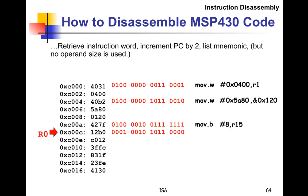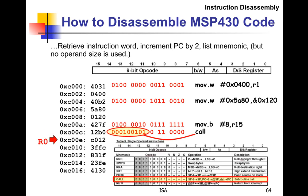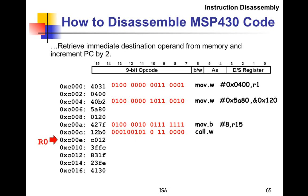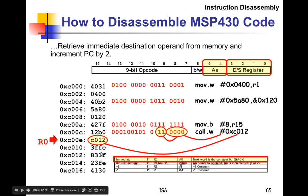The next instruction looks different — not a move instruction. Looking at the table, it's one of those 9-bit opcode instructions. We advance the PC and find it in the table: it's a CALL instruction. The addressing mode is immediate, and the immediate value is C012. So we're going to jump to C012, which is a location further down. We advance the PC and continue.